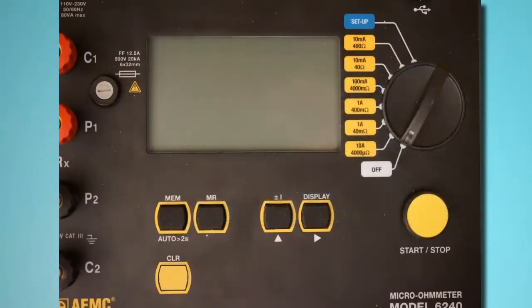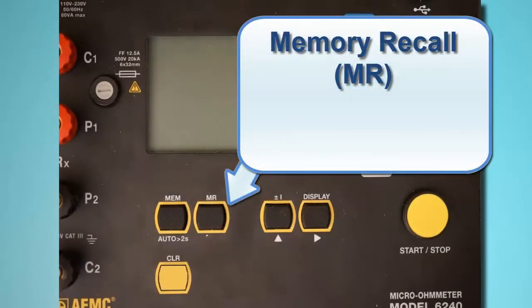To the right of the memory button is the Memory Recall button, labeled MR. This displays records stored in memory.